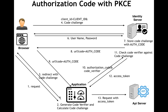Authorization code with PKCE is almost similar to authorization code with small changes, because there is no client secret. Let's see the flow. The user makes a request to the application. The application generates a code verifier, hashes the code verifier to produce what we call the code challenge, and sends that code challenge to the browser. The browser forwards the request to the identity server, the user gets authenticated, and once authenticated the code challenge is stored and mapped to the auth code on the identity server. The auth code is then returned to the browser and forwarded to the application.